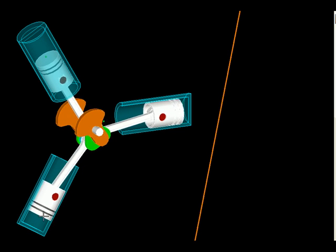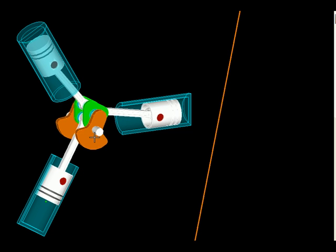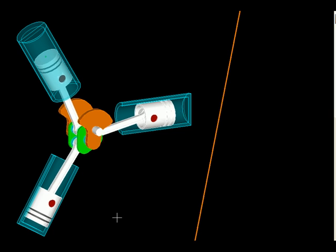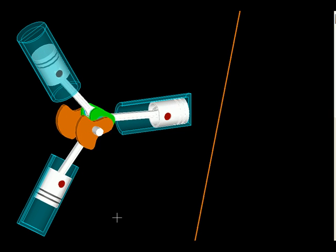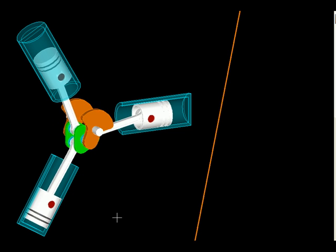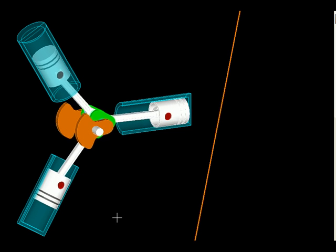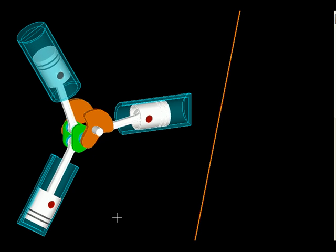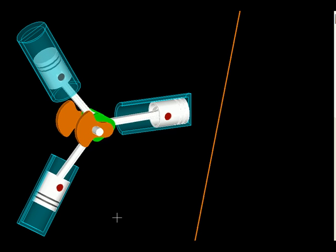By putting it all together, we can see a mechanism is a set of links connected with kinematic pairs that helps us to transmit or modify motion and forces.